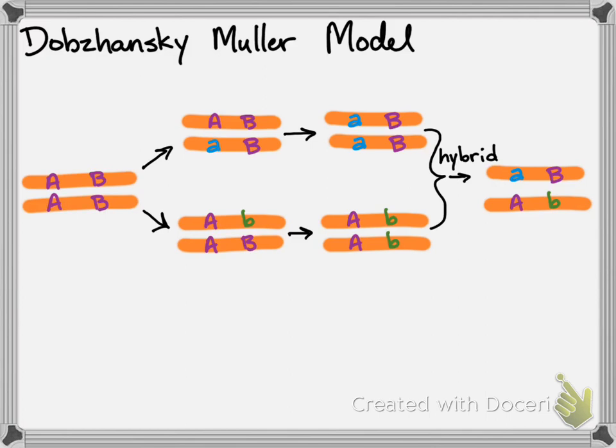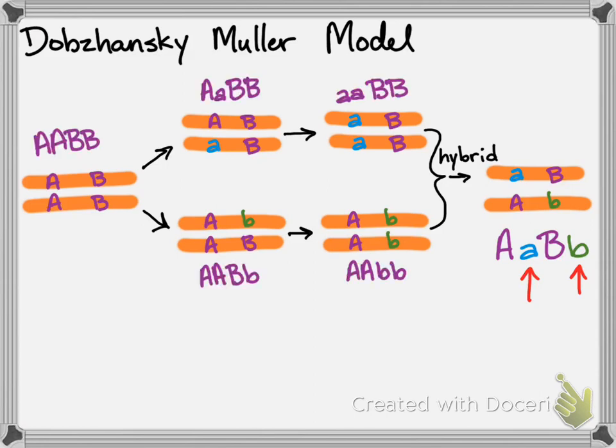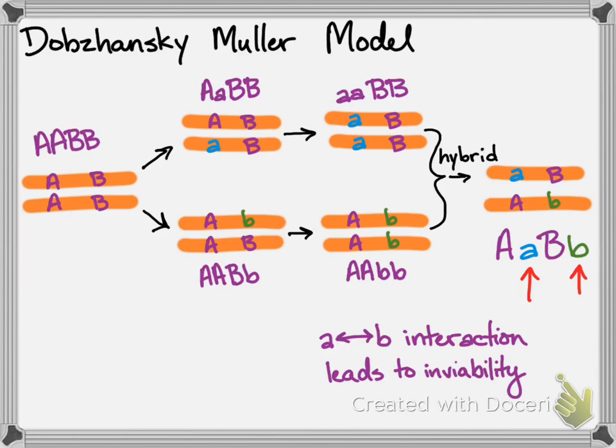The presence of the little a and little b gene together causes the inviability. In all the other populations, there is no little a little b interaction. So the model proposes that the little a little b interaction is the answer to why the genetic defect only shows up in hybrids.